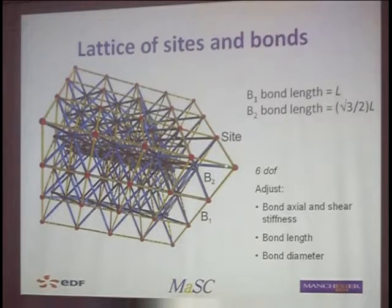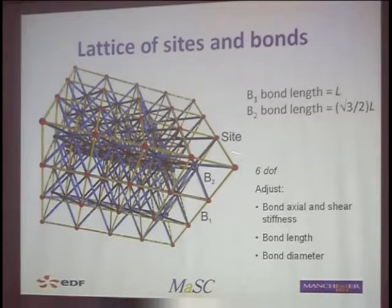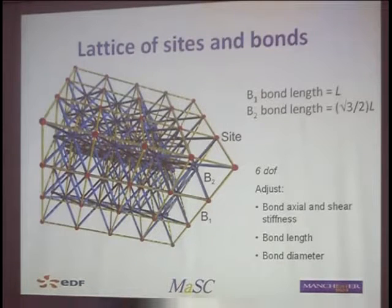We allow each site to have six degrees of freedom. You'll probably recognise this by a number of different names: Cosserat elasticity, coupled stress methods, or micropolar elasticity — they're all variants of the same thing. What we're doing computationally is building this up, making these bonds as little beams, and giving the beams six degrees of freedom. We're going to alter the stiffnesses of the bonds, the length of the bonds, and the diameter of the bonds — altering the mechanics of these bonds to produce a structural model.